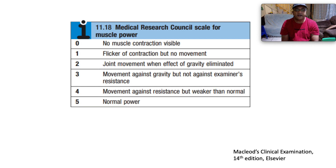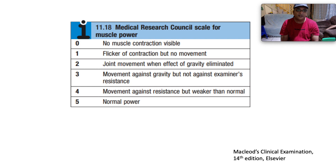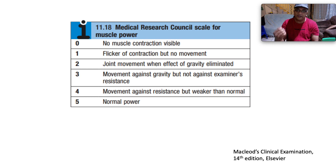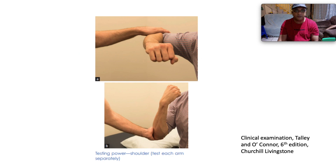Muscle power is graded using the Medical Research Council (MRC) scale from 0 to 5. Grade 0 is no visible muscle contraction; grade 1 is a visible contraction but no movement; grade 2 is joint movement when gravity is eliminated so the limb moves but can't leave the bed; grade 3 is movement against gravity but not against the examiner's resistance; grade 4 is movement against resistance but subnormal; grade 5 is normal power.